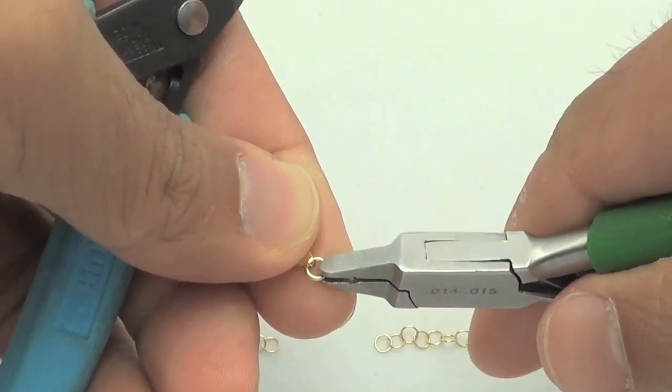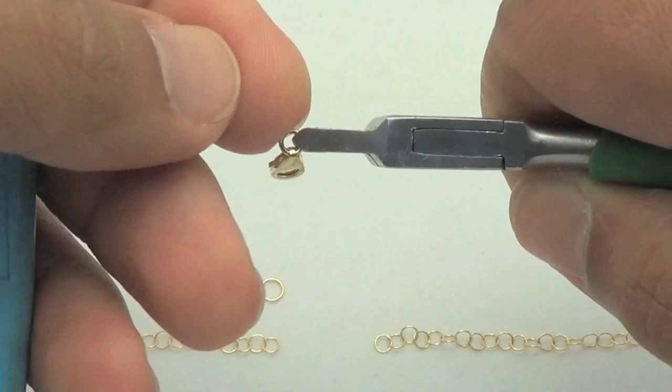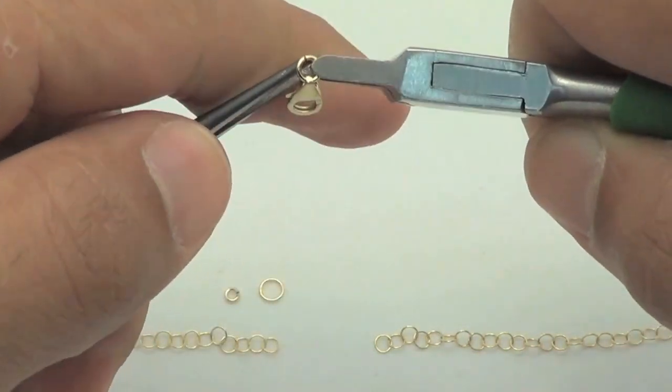Use your flat nose plier to get a good grip of the jump ring. That's really the most important step. Get a good grip. It makes your life so much easier.